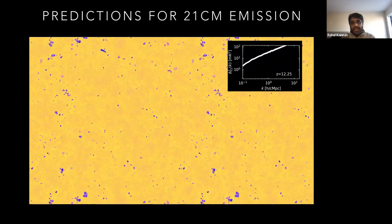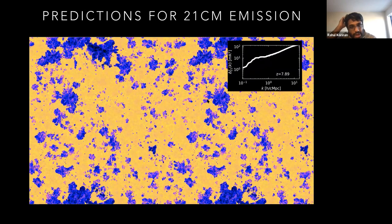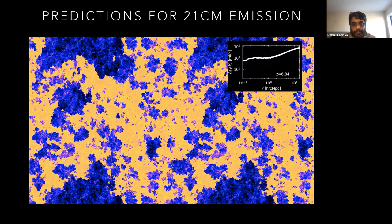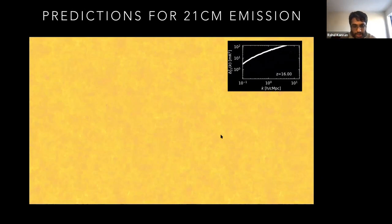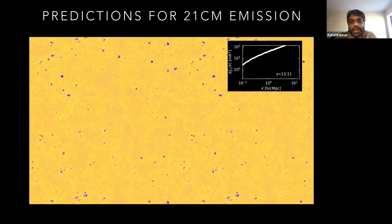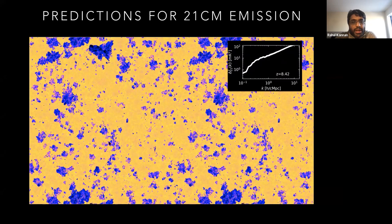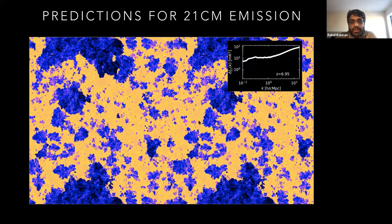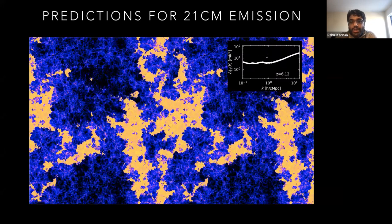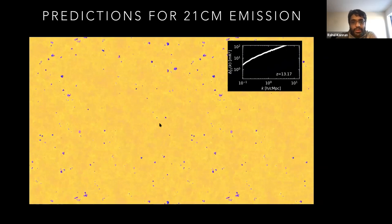Let's go to the intensity mapping estimates. Here I show the 21-centimeter emission — yellow is bright, blue is dark. Initially the whole universe is neutral, so you get 21-centimeter emission from the whole universe — that's redshift 16 on the top right, where I show the power spectrum evolution. Then as you punch holes into this neutral distribution and ionize the gas, you form ionized bubbles around galaxies which percolate out and reduce the 21-centimeter emission. The power spectrum evolves as you go along. Finally, only the high-density filaments and knots remain neutral, while the rest of the universe at the end is fully ionized.